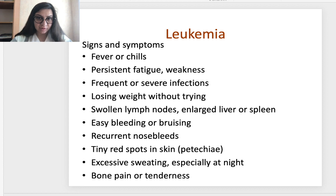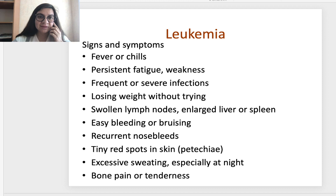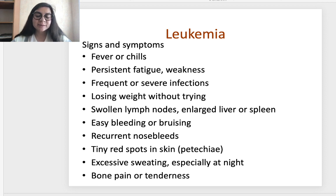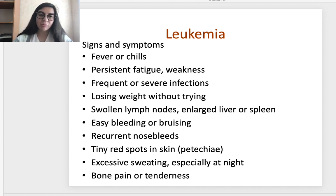Signs and symptoms of all types of leukemia are nearly the same clinically: fever or chills, persistent fatigue and weakness, frequent or severe infections, losing weight without trying, swollen lymph nodes and enlarged liver or spleen, easy bleeding or bruising, recurrent nosebleeds, tiny red spots in the skin called petechiae, excessive sweating especially at night, and bone pain or tenderness. These symptoms are very nonspecific, making it easy to miss a leukemia diagnosis initially.